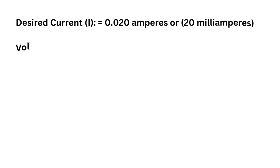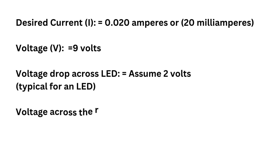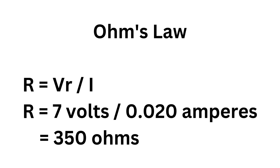Desired current I: 0.020 amperes, or 20 milliamperes. Voltage V: 9 volts. Voltage drop across LED: assume 2 volts, typical for an LED. Voltage across the resistor VR = V − V_LED = 9 volts − 2 volts = 7 volts. Using Ohm's Law, we rearrange to find resistance: R = VR / I = 7 volts / 0.020 amperes = 350 ohms.